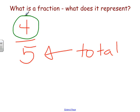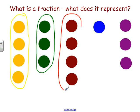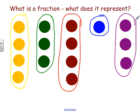Let's look at an example here of these colored dots. Let's say this represents a class of students — or at least students who are here today — and what their favorite colors are. We have four students whose favorite color is yellow, three whose favorite color is green, four whose favorite color is red, one whose favorite color is blue, and three whose favorite color is purple.